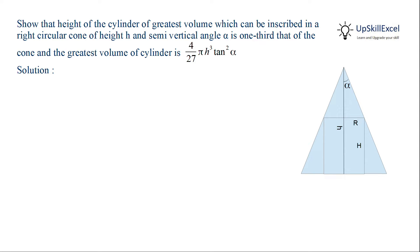Here we have a right circular cone having height h and semi-vertical angle alpha. Inside it a cylinder of greatest volume is inscribed. We have to show that the height of such cylinder will be one-third the height of the cone and the volume of cylinder will be 4 over 27 pi h cube tan square alpha.